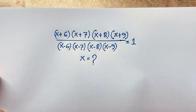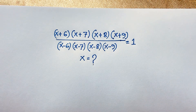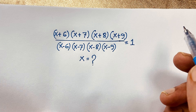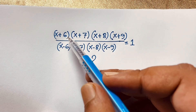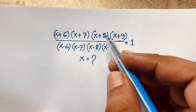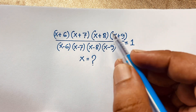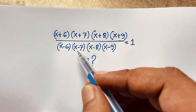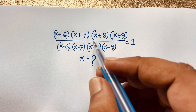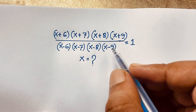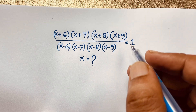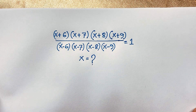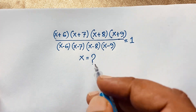Hello everyone, welcome to Russia's Classroom. Today we have solved a nice math olympiad question. The question is: (x+6)(x+7)(x+8)(x+9) over (x-6)(x-7)(x-8)(x-9) is equal to 1. We'll find out the value of x in this math olympiad question.